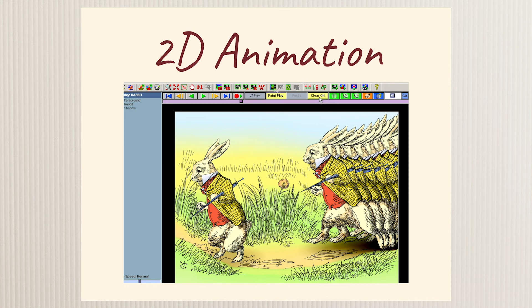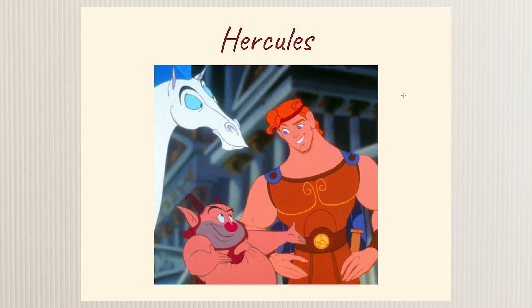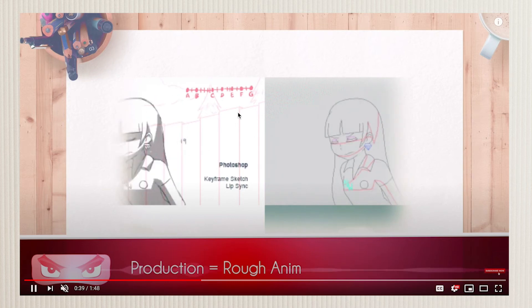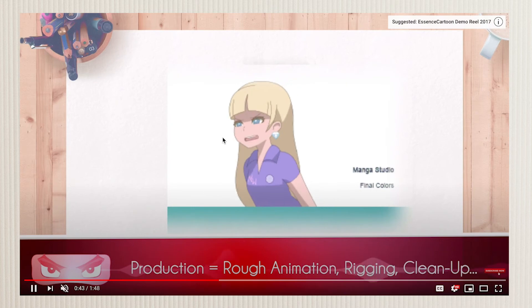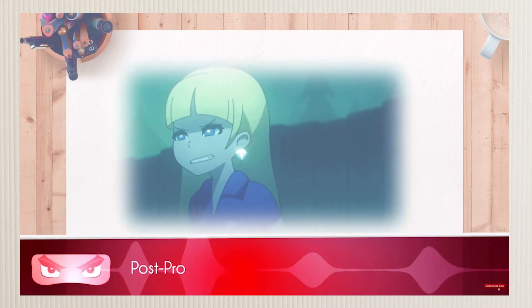Next we have 2D animation, which is a mix of traditional and digital — they use computers but also draw characters by hand. Examples include The Emperor's New Groove, which is still flat but has a different look than painted celluloid. Hercules and Lilo & Stitch are also examples. Someone draws what the character looks like on paper, brings it into digital programs for coloring and refinement, then brings it into After Effects for special effects, lighting, and mood.